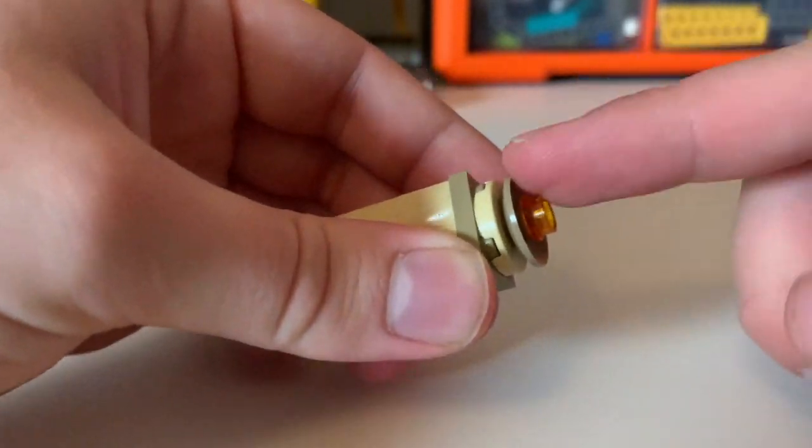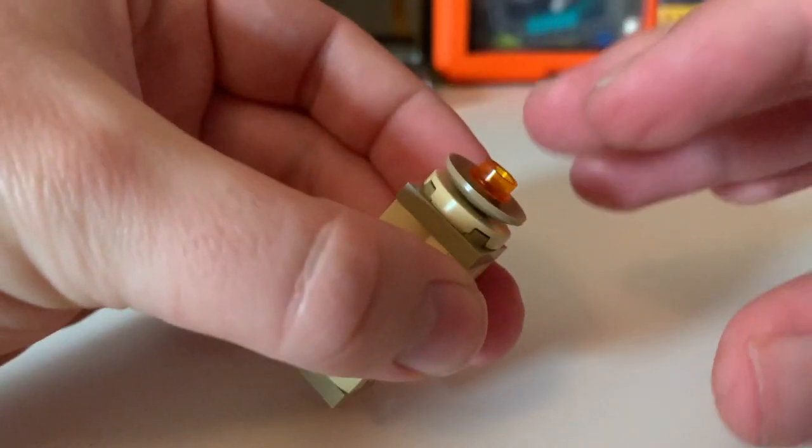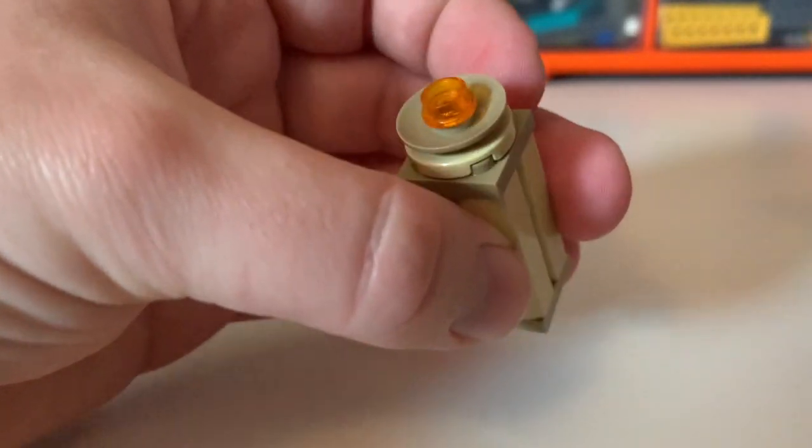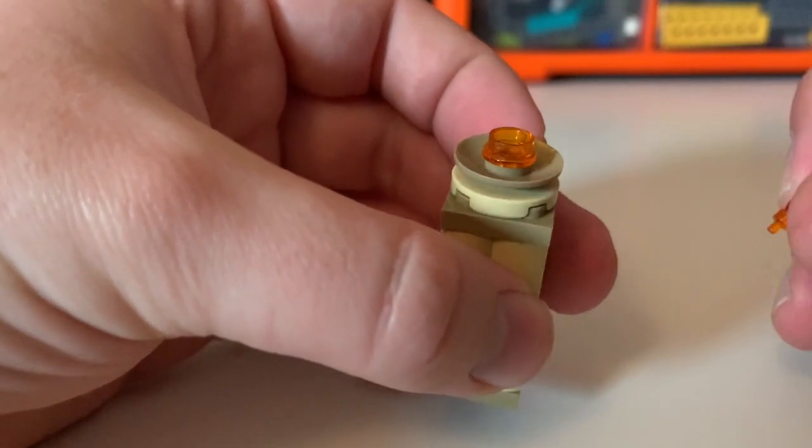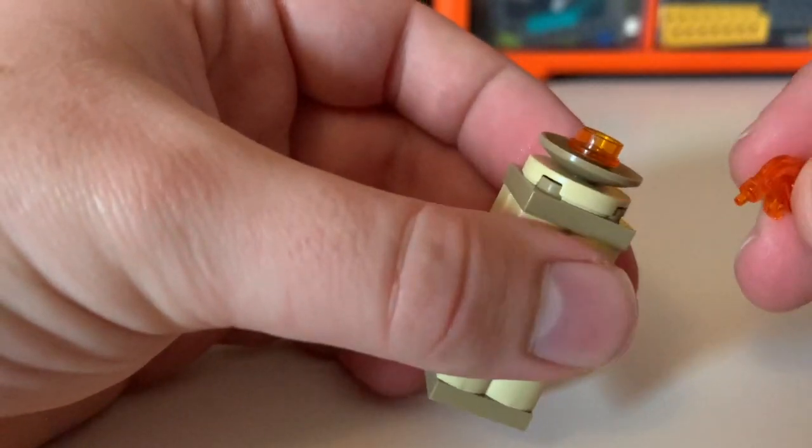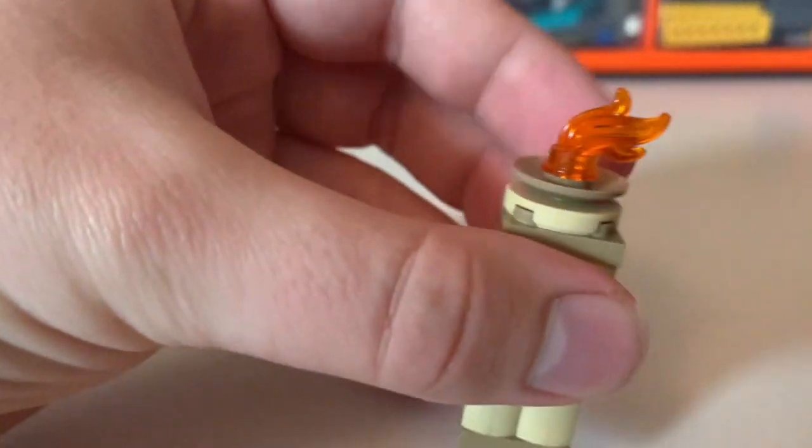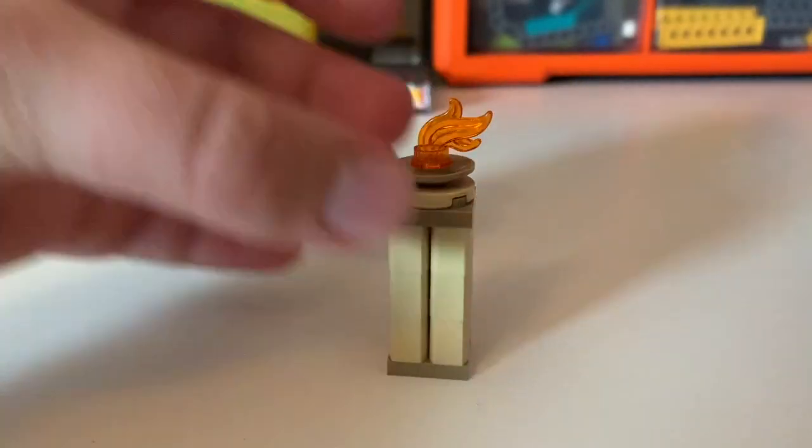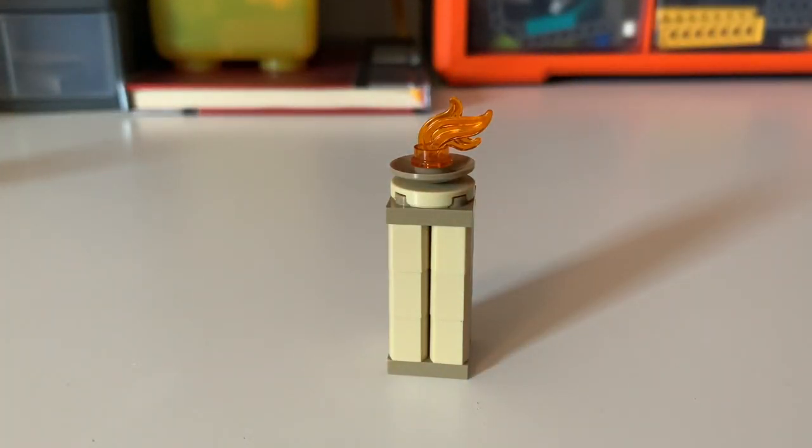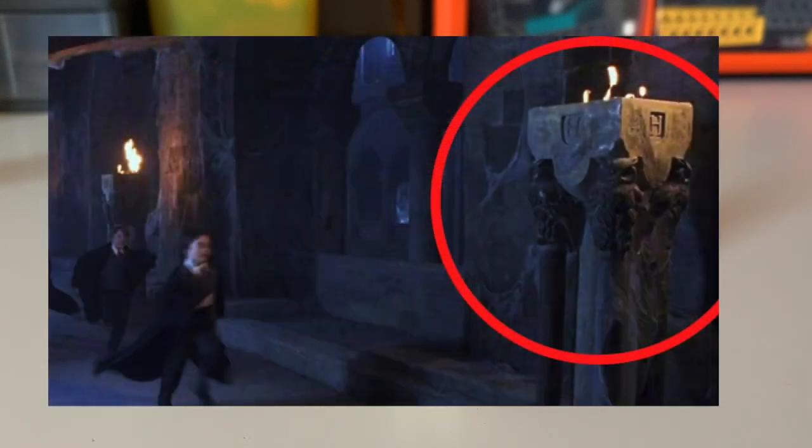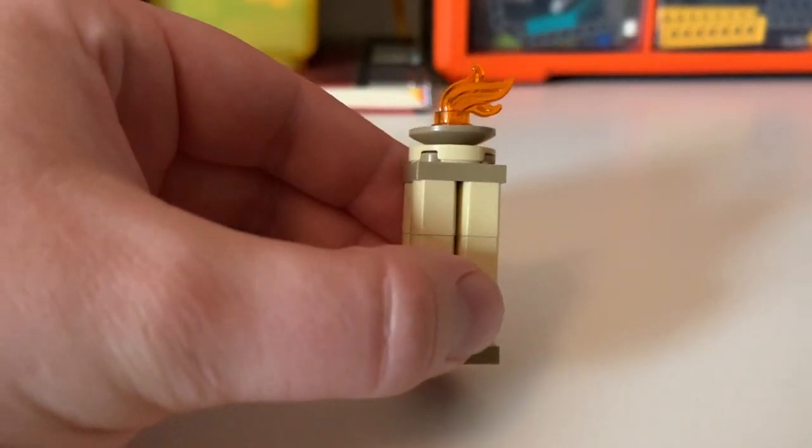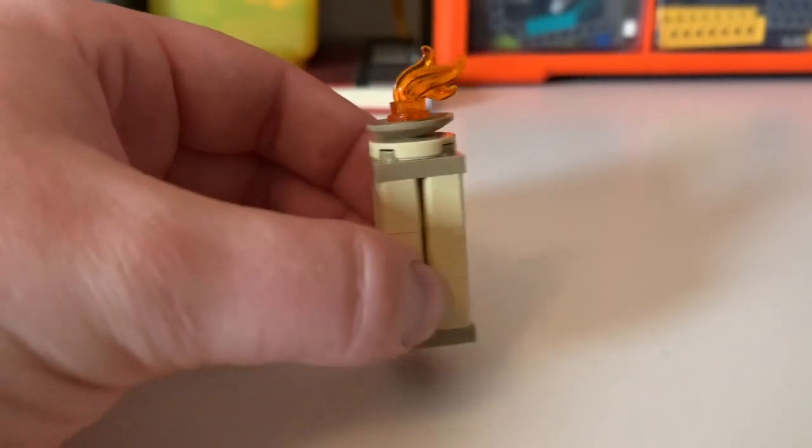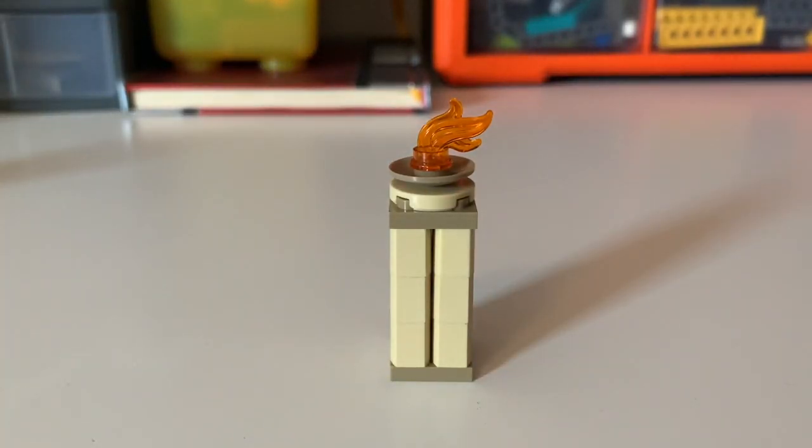Under that is a 2x2 round tile with the hole in the middle, and then fixed into that to reverse the direction of the studs is a dish piece, a 2x2 dish in dark tan. Fitted into that as a 1x1 hollow stud in trans orange, and then fitted into that as a small flame or plume piece, again in trans orange. There are quite a few of these dotted around the castle.